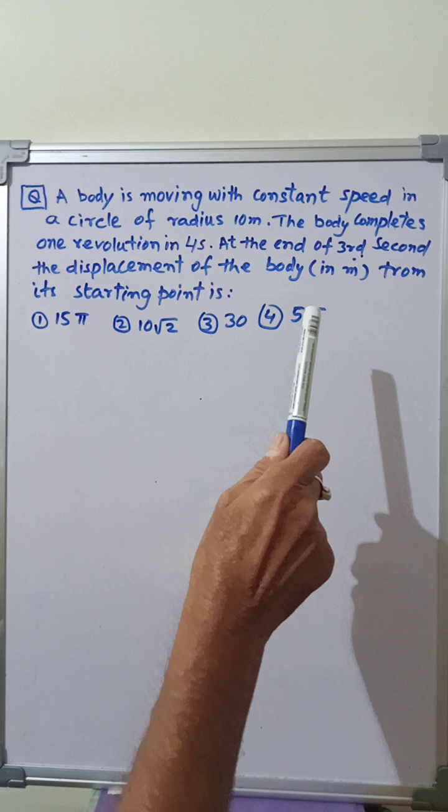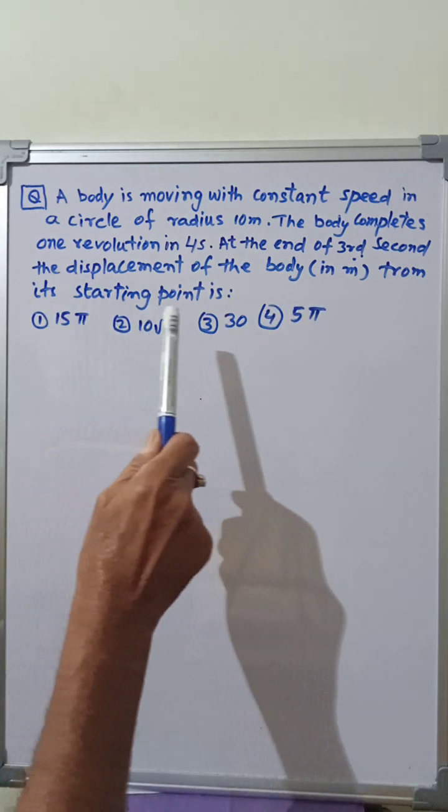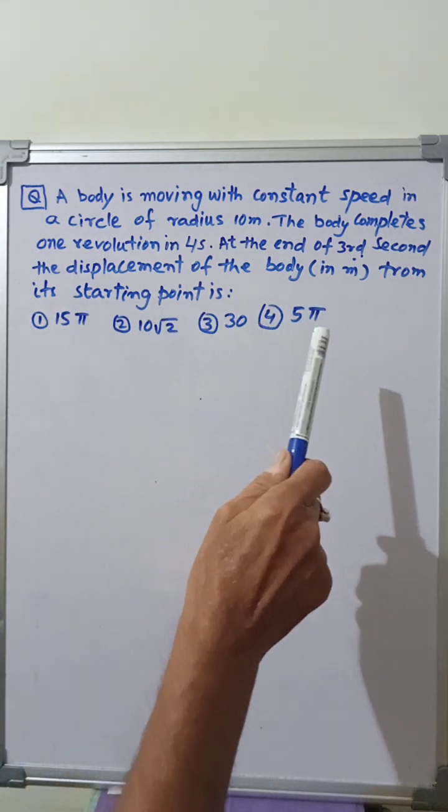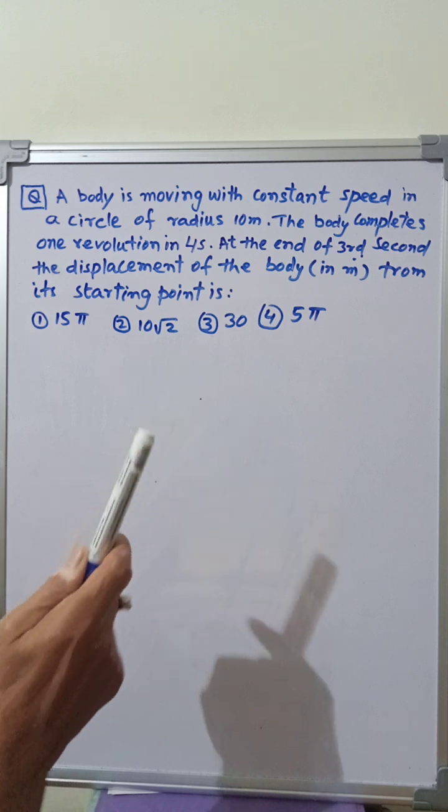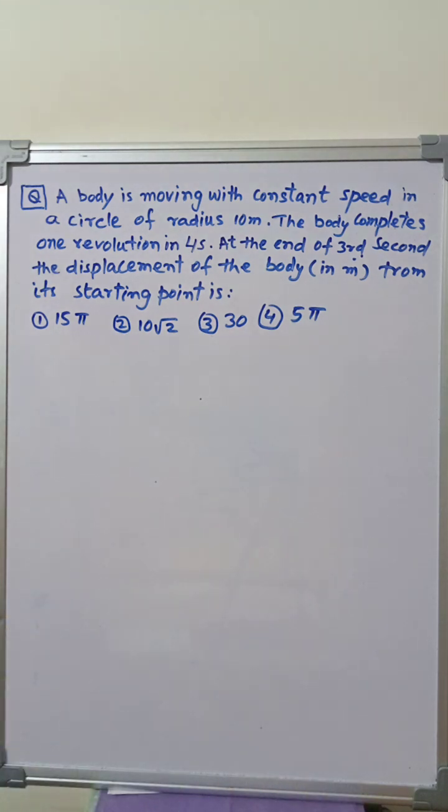At the end of third second, the displacement of the body in meters from its starting point is. The options are given in the question. We are required to find the correct option.